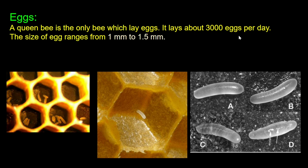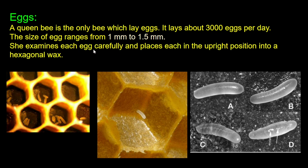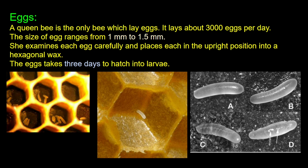The queen lays about 3000 eggs per day. The size of each egg ranges from 1 mm to 1.5 mm. The queen examines each egg carefully and places each in the upright position into a hexagonal wax cell. The egg takes 3 days to hatch into a larva.